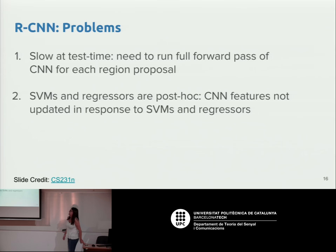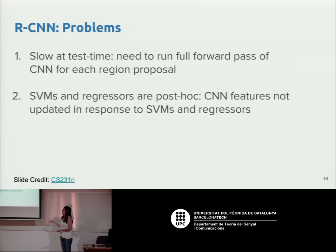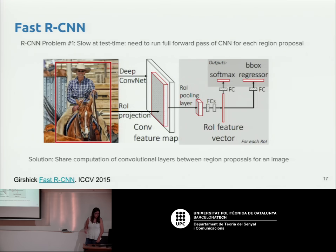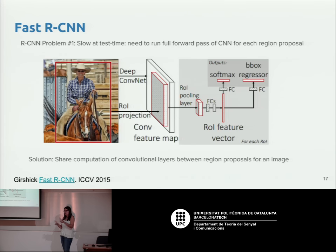There are several problems with the original R-CNN approach. First, having 2,000 proposals and extracting features for each one separately is very slow. Second, CNN features are extracted and then used to train a support vector machine — the CNN is not trained end-to-end for the object detection task directly. The same authors then created Fast R-CNN to address these two issues. Instead of forwarding each proposal into the network separately, they extract features for the whole image at once, and then crop on top of the feature map to describe each region.